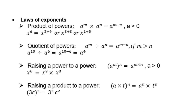Quotient of powers: if you divide, we subtract the exponents, so it's a to the power m minus n. We prefer to subtract the smaller exponent from the bigger one. Example: a to the power 10 divided by a to the power 6 is a to the power 4. Raising a power to a power: a to the power m, to the power n — you multiply the two exponents, giving a to the power mn. Example: x to the power 6 is the same as x cubed times x cubed.